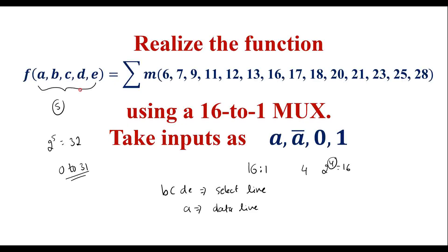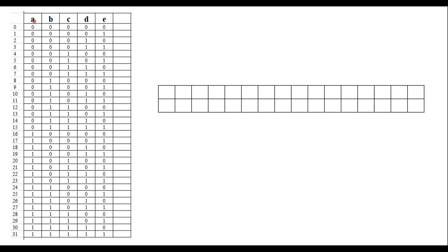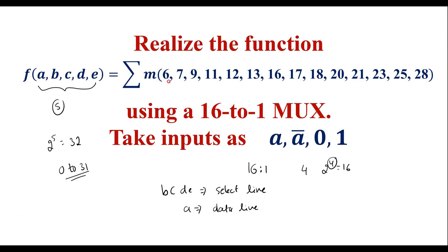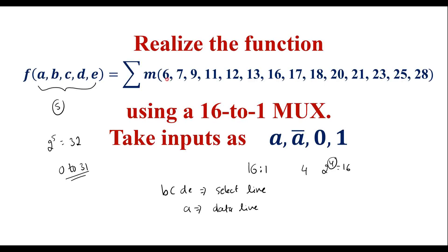First, let me write all possible inputs for 5 variables — that is a, b, c, d, e. So here a, b, c, d, e are the inputs. The possible input values are written from 0 to 31. Here I have written the decimal representation for understanding purposes. So this is 0, this value is 1, 2 and so on — and this is the 31 value. So here the minterm values are given.